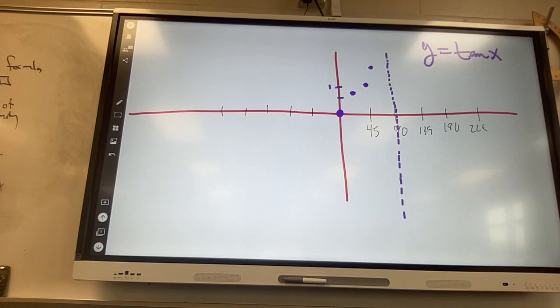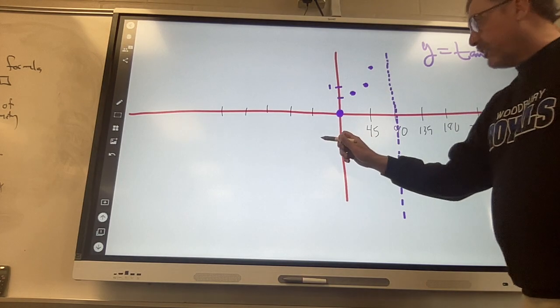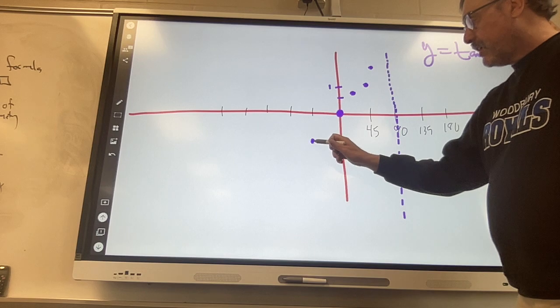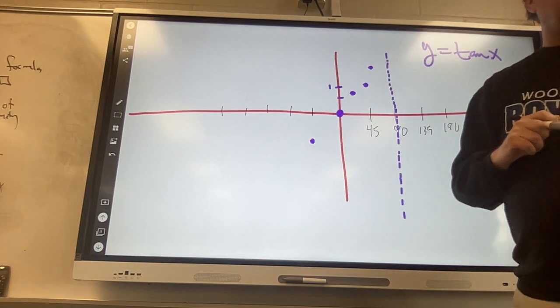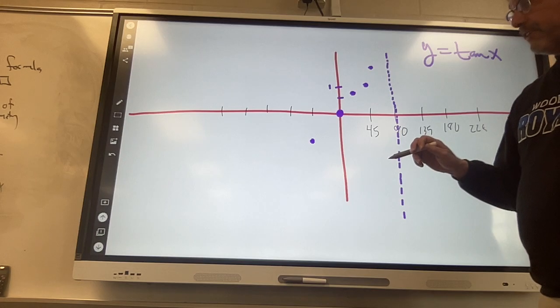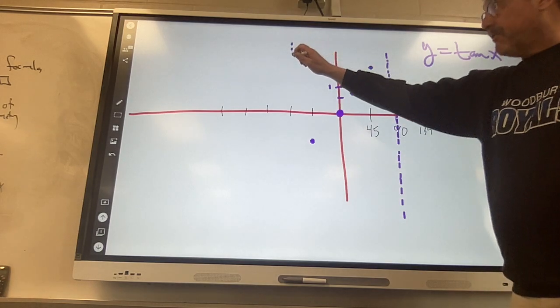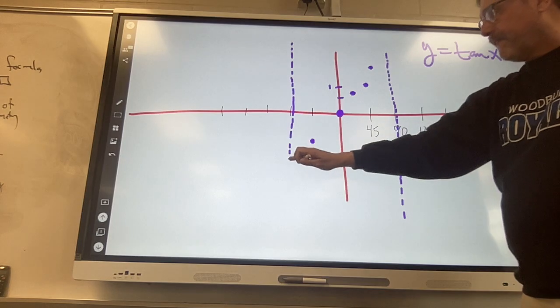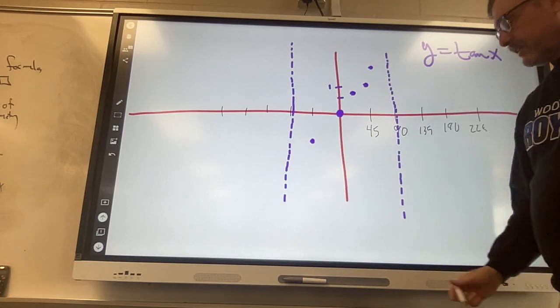Now do me a quick favor. Look at negative 45. What is the tangent of negative 45? Negative 45 is the same as what? What's the tangent of 315 or negative 45? Negative 1. And of negative 90? Undefined. At negative 90, please draw a dotted line like that.